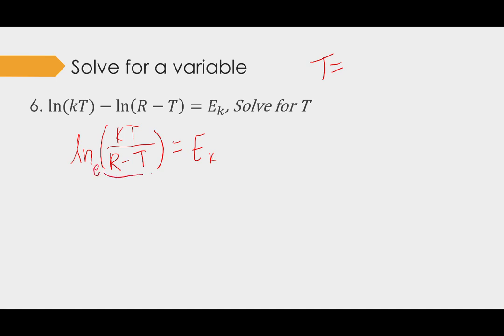So e to the e sub k is equal to the answer of k times t over r minus t. You still need to get t by itself and it's already in two places in one fraction. So let's first try to get it out of a fraction and multiply both sides by r minus t. And this will distribute back into there.